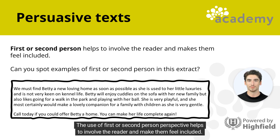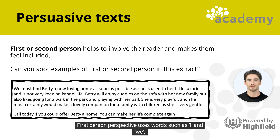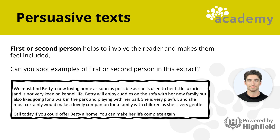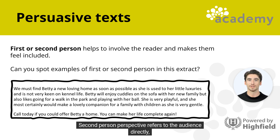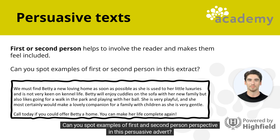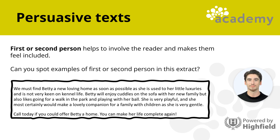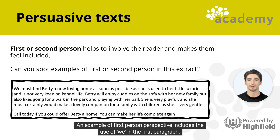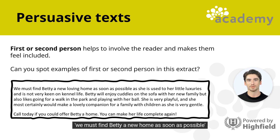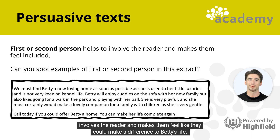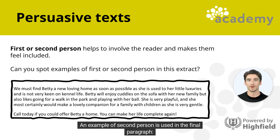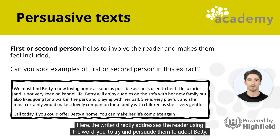The use of first- or second-person perspective helps to involve the reader and make them feel included. First-person perspective uses words such as 'I' and 'we.' Second-person perspective refers to the audience directly, using words like 'you' and 'your.' An example of first-person perspective includes the use of 'we' in the first paragraph: 'we must find Betty a new home as soon as possible,' which involves the reader and makes them feel like they could make a difference. An example of second person is in the final paragraph: 'You can make her life complete again,' directly addressing the reader to persuade them to adopt Betty.